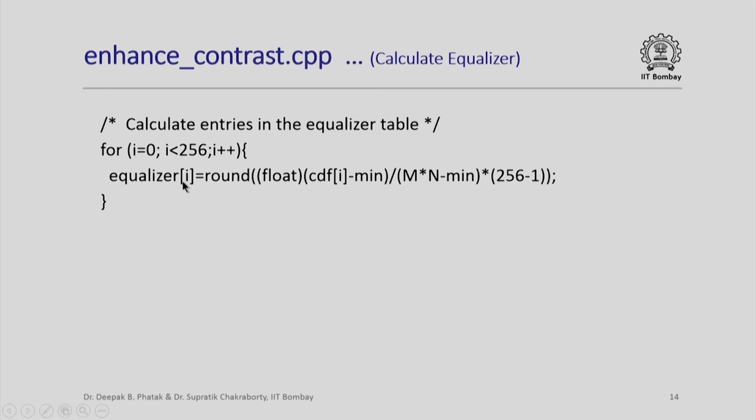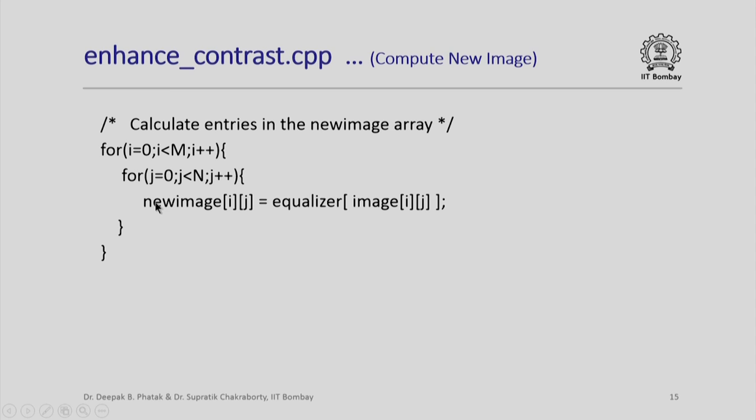What does equalizer[i] contain now? If a pixel value in the original image is i, then the equalizer[i] will give me the new image value. I again use the associative property of the equalizer array itself to calculate values of my new image. I run a scan for 0 to m minus 1, 0 to n minus 1. I look at every original image value i,jth element. Use that as an index in the equalizer array to calculate the i,jth element of the new image. Notice again how beautifully simple the computations are. In a single scan of image array, I convert every element of the image array into a new image array.